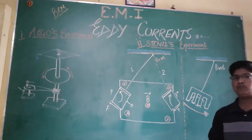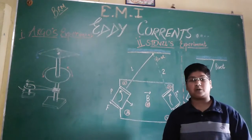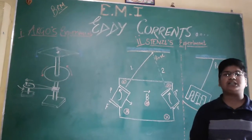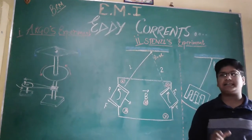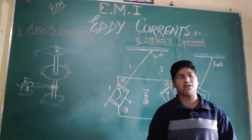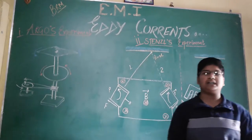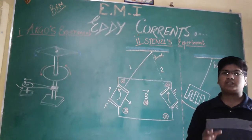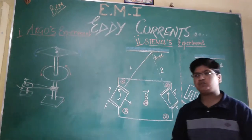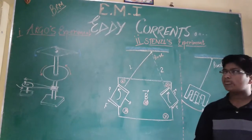First of all we have to know what Eddy current is. The circulating current set up in a metal piece moving through a magnetic field is known as Eddy current. The circulating current set up in a metal piece moving through a magnetic field is known as Eddy current.